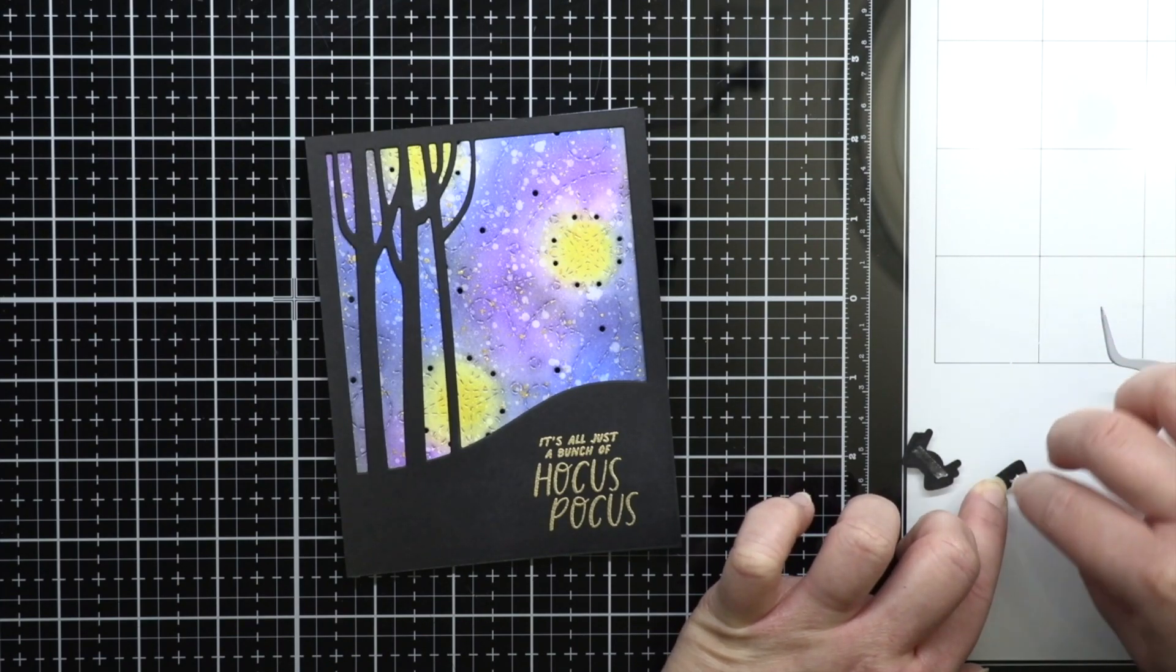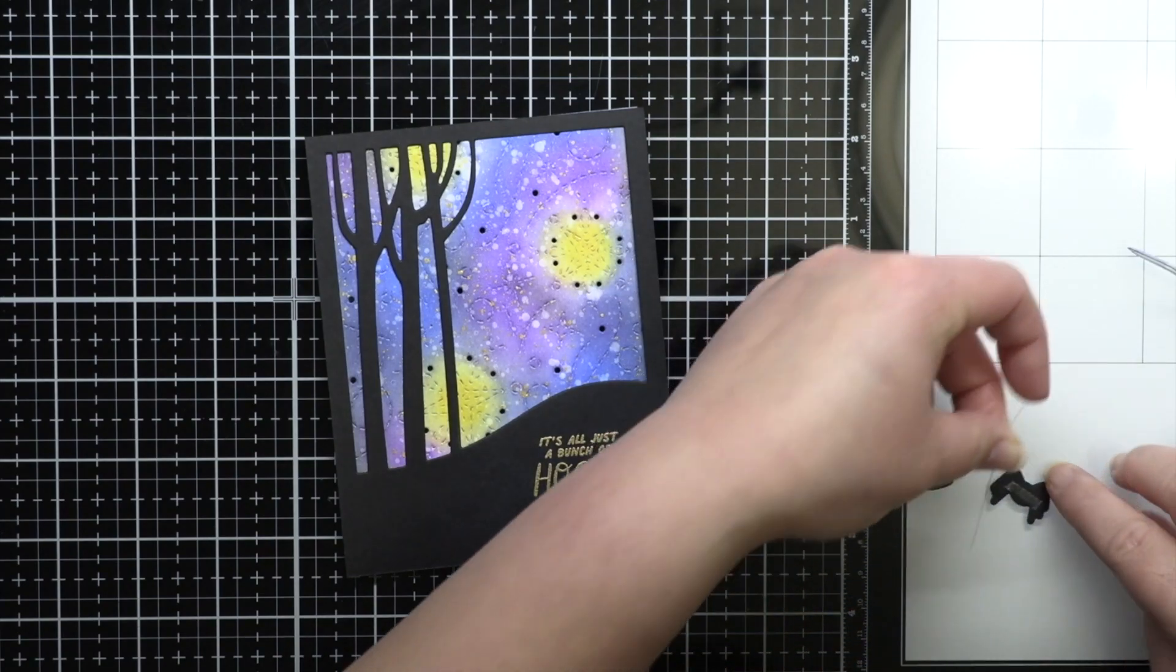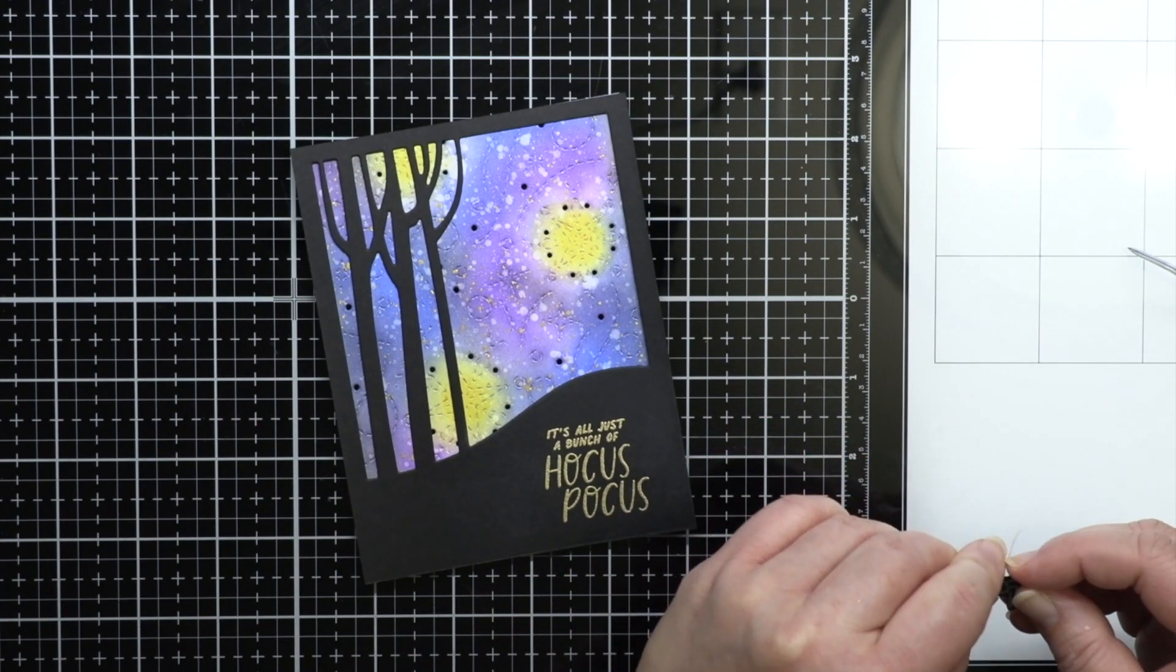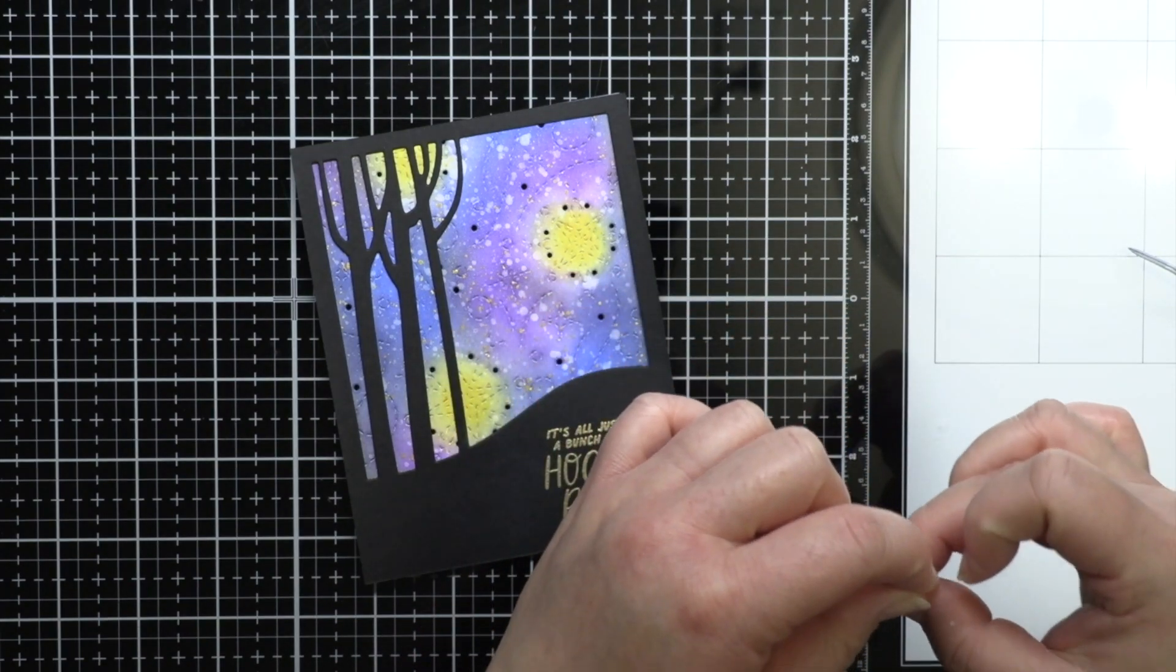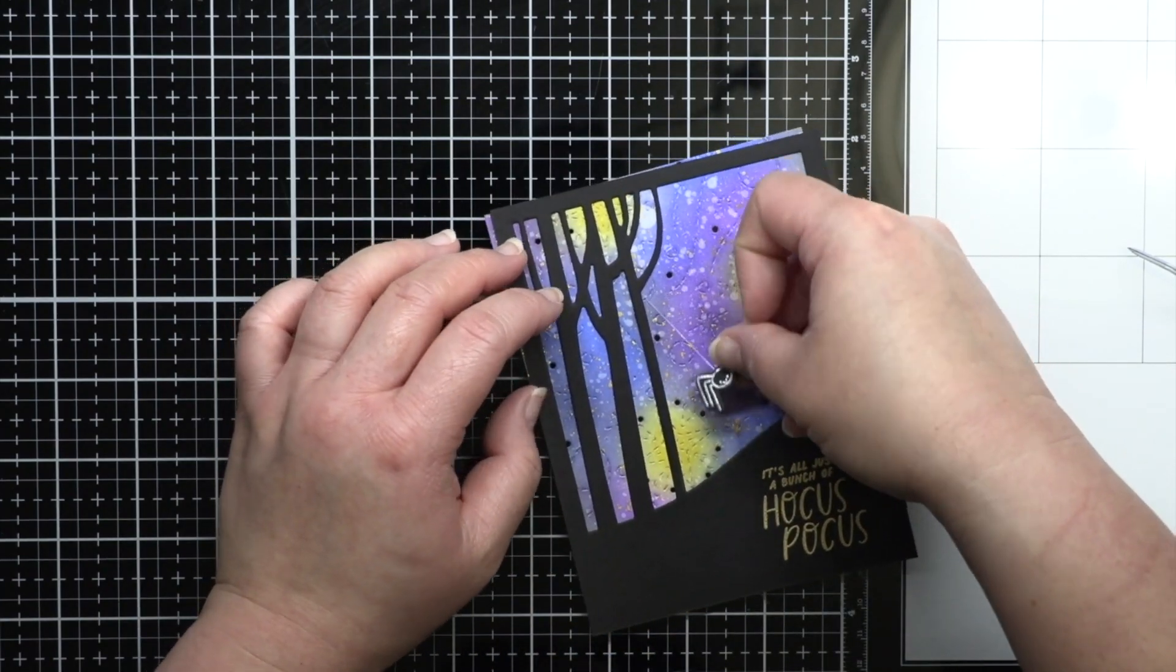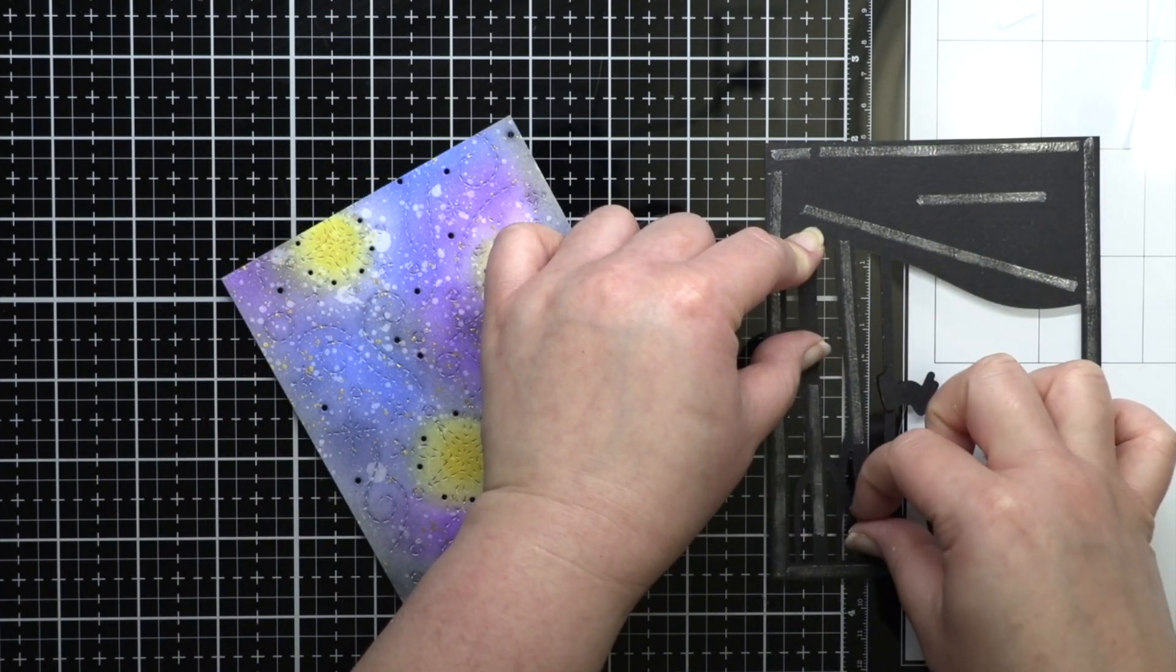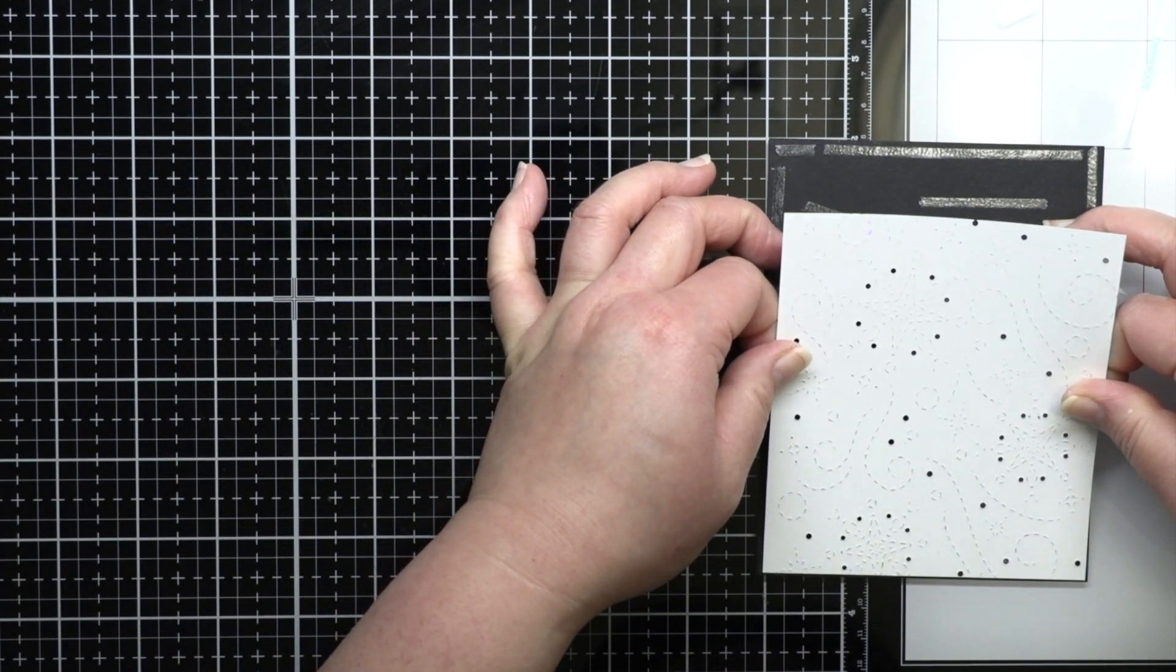So I add score tape to the back of the heat embossed spider and the front of the die cut spider and sandwich a small piece of monofilament clear string in between. Then I add adhesive to the back of the birch tree cover plate die and press the end of the string into the adhesive before adhering the twirling flurries blended panel on top.